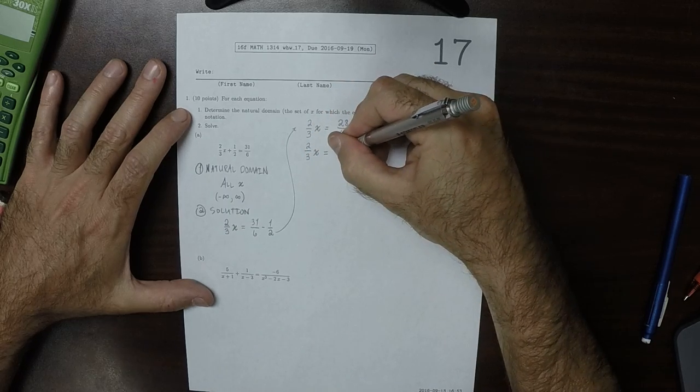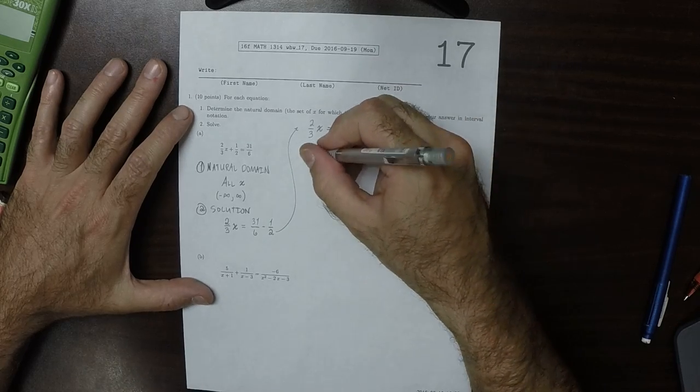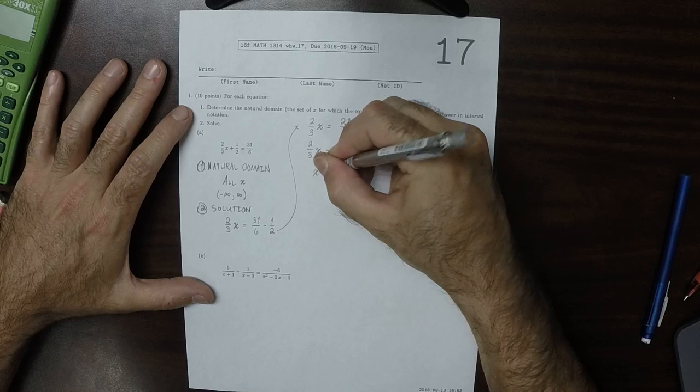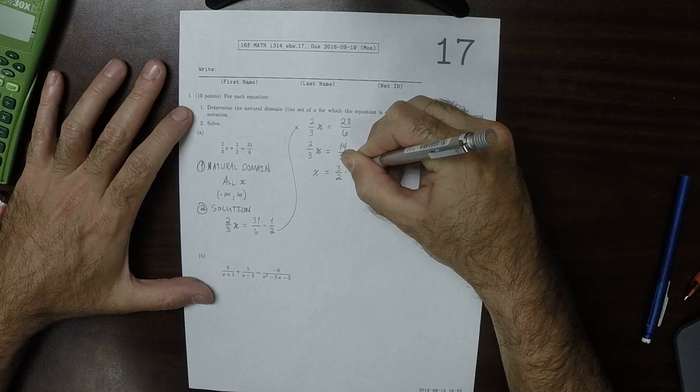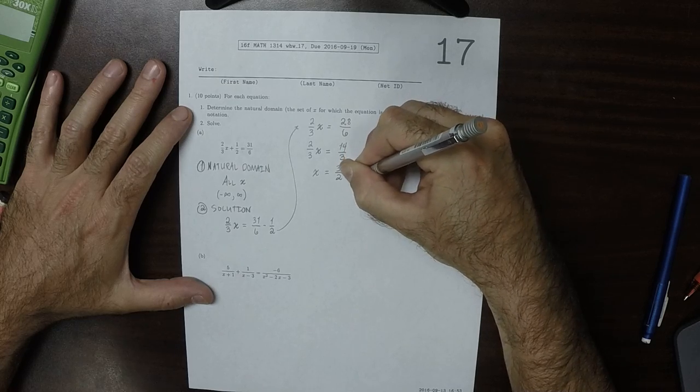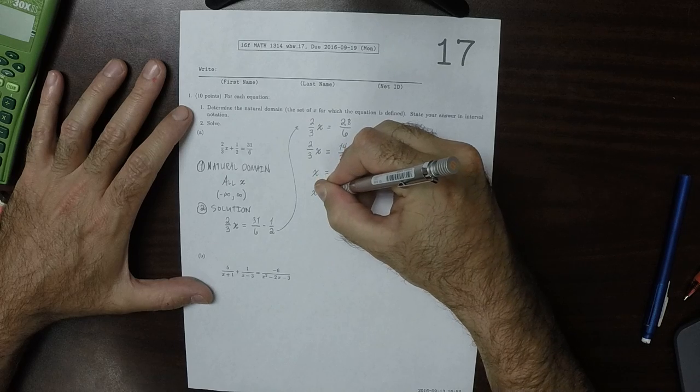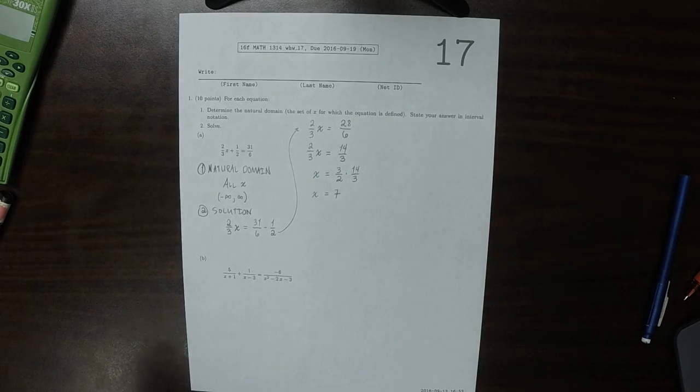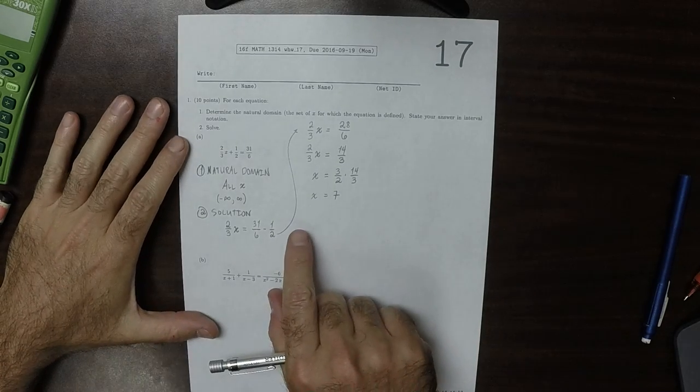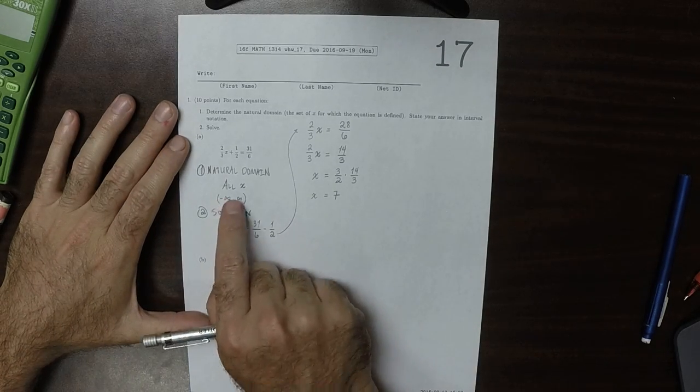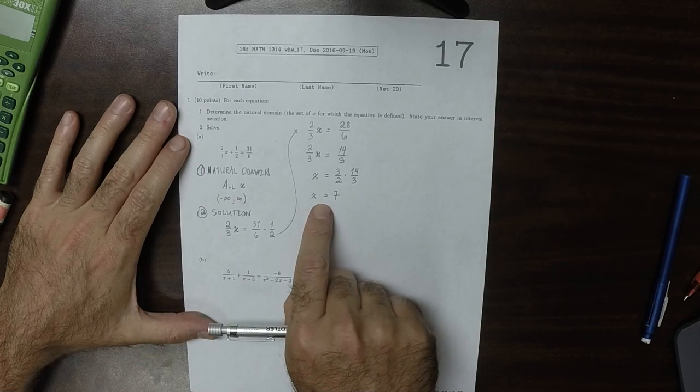So that would be 14 over 3. And then multiplying by the reciprocal, that would be 3 halves multiplied by 14 thirds. 3's cancel, the 2 and the 14 cancel, to give you 7. So the way to interpret that, it's saying that you can evaluate this equation at any x, but the only place it's going to evaluate true is at 7.